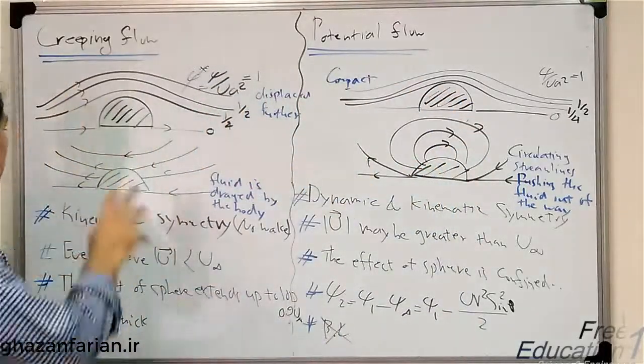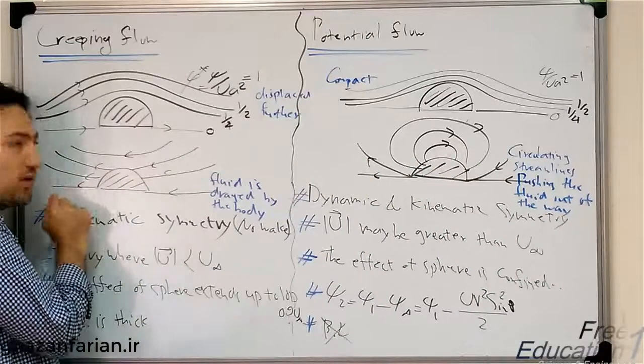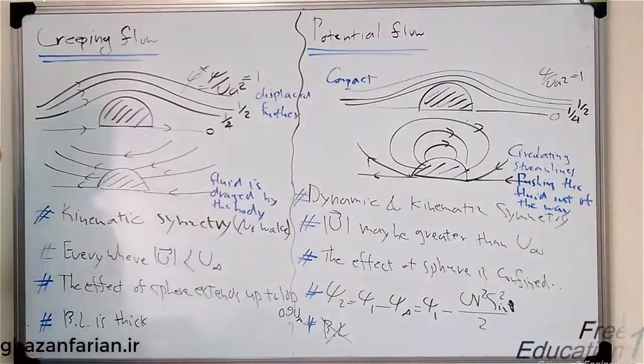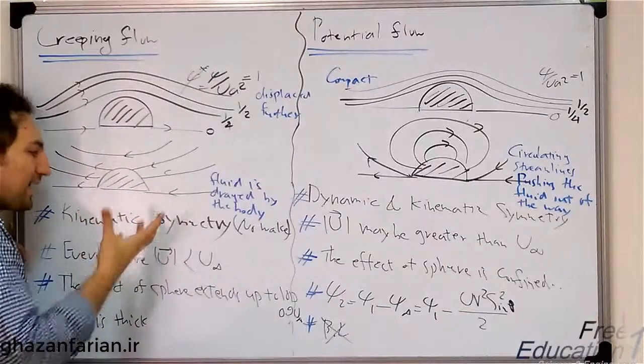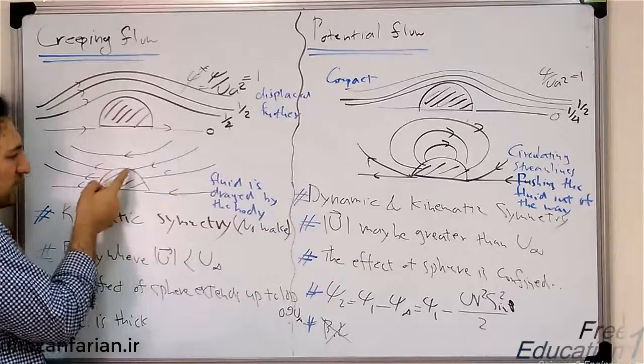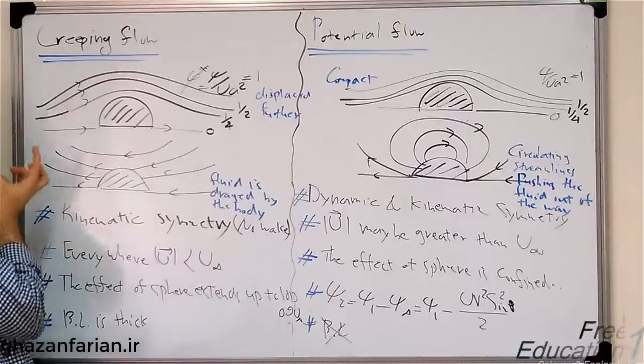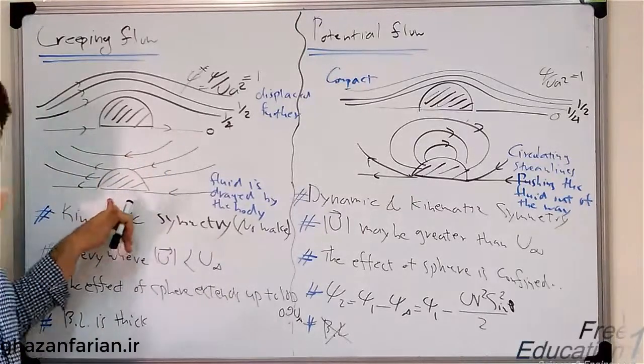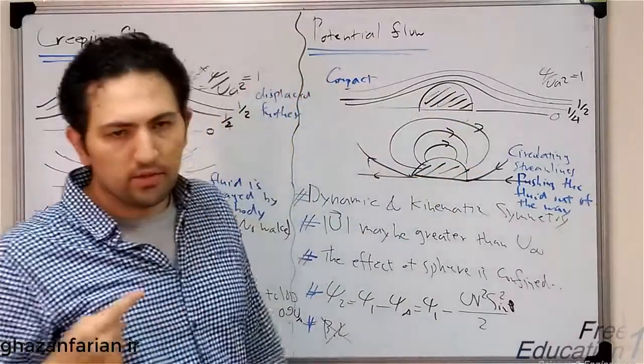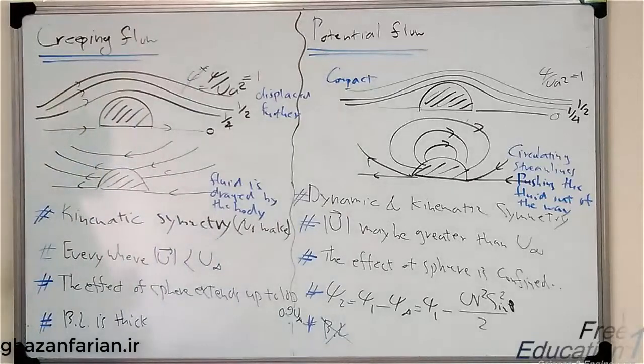But here the sphere creeps inside the fluid. So the title of the creeping flow is meaningful here. The fluid is dragged by the body, or the moving sphere drags the fluid particle near itself with it during the motion. So this is the creeping-like motion. But this is the circulating motion, which pushes the fluid particle away from the path of the sphere.